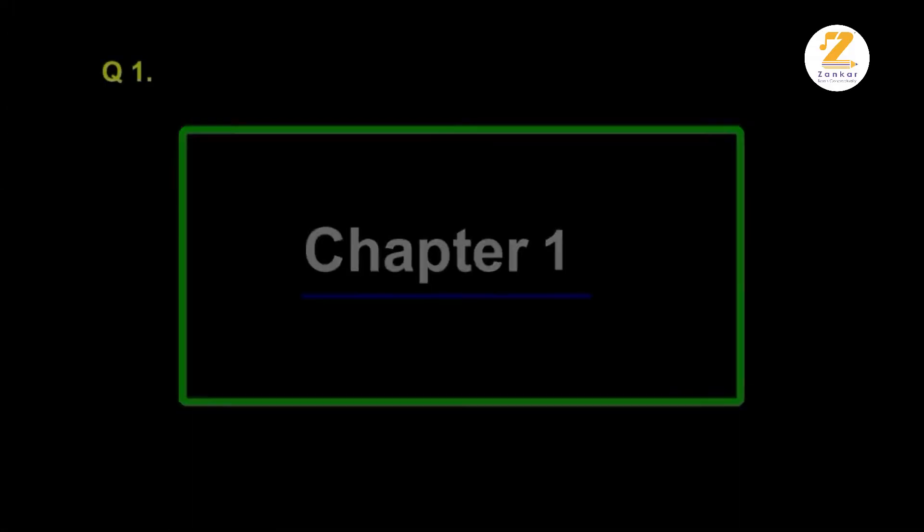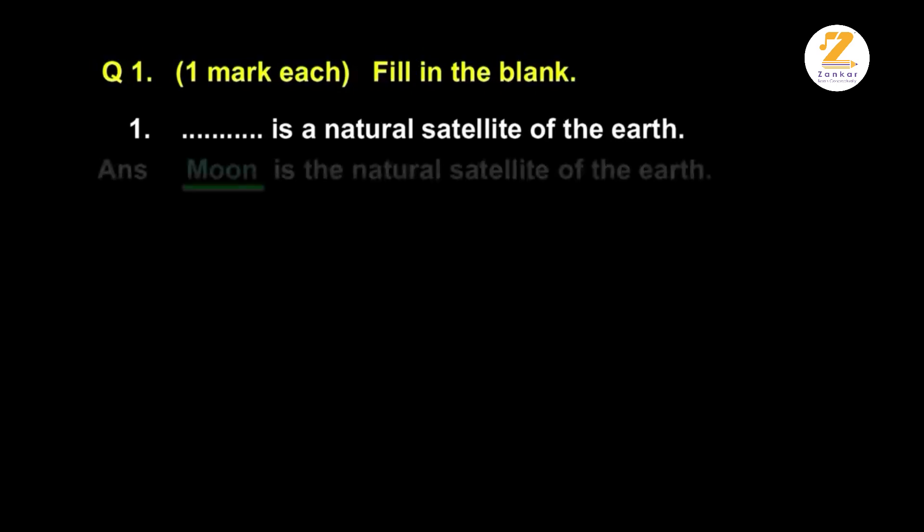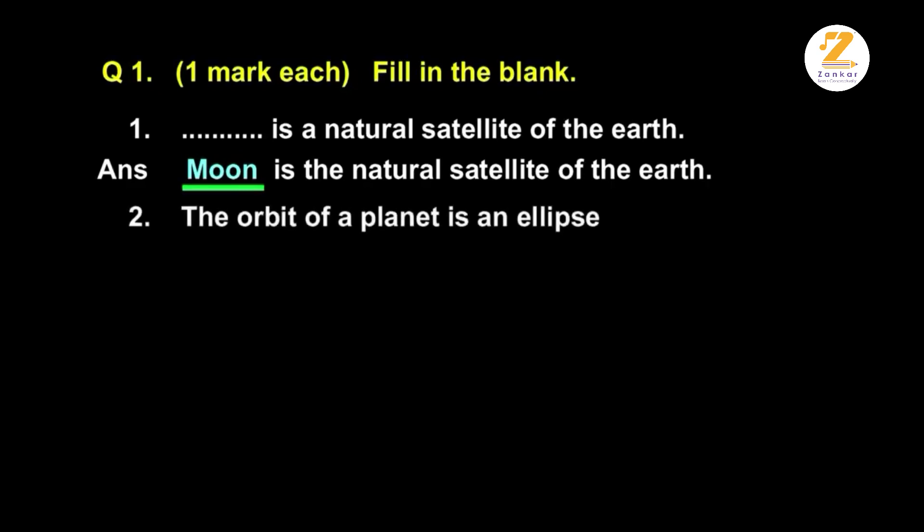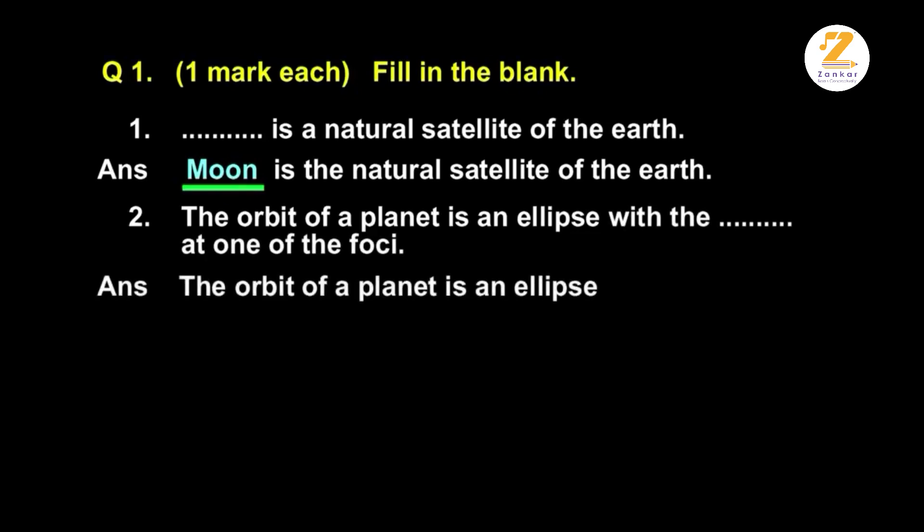Chapter 1, Question 1, one mark each. Fill in the blank. Dot dot is a natural satellite of the earth. Moon is the natural satellite of the earth. The orbit of a planet is an ellipse with the dot dot at one of the foci. The orbit of a planet is an ellipse with the sun at one of the foci.